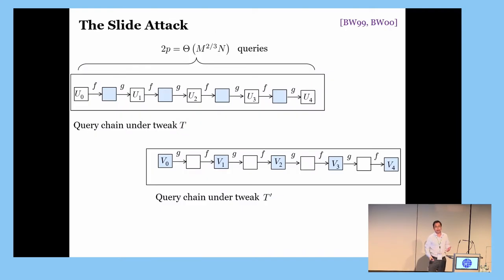So, this similarity allows one to mount what is known as a slide attack by Alex Biryukov and David Wagner. In particular, we first create a query chain under tweak T as follows. We start at a random point U0, and query that to the encryption oracle under tweak T to get the point U1. We then query U1 to the encryption oracle under tweak T again to get another point U2, and so on. By repeating this process, we obtain a chain under tweak T. Likewise, we can obtain another chain under tweak T prime for a random point V0.